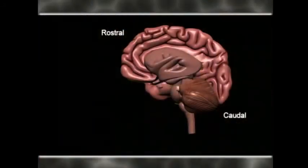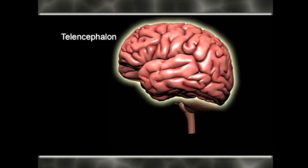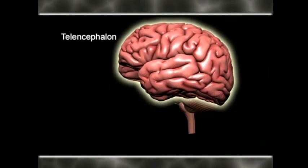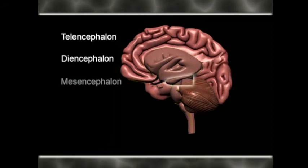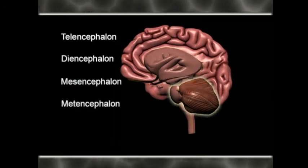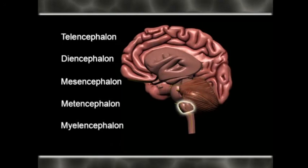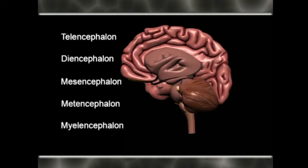To summarize: there are five subdivisions to the adult human brain. From rostral to caudal, these are the telencephalon — which characterizes our human brain — the diencephalon, the mesencephalon, the metencephalon, and the myelencephalon, and then continuous with the spinal cord. All of this together constitutes our central nervous system.